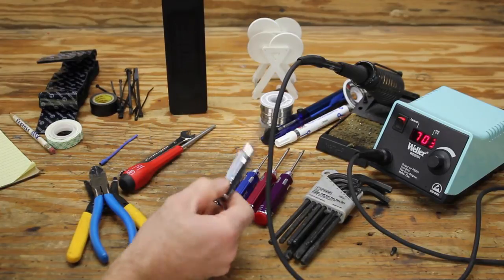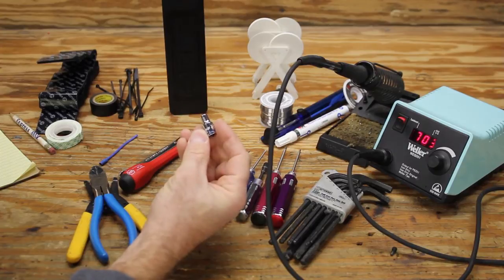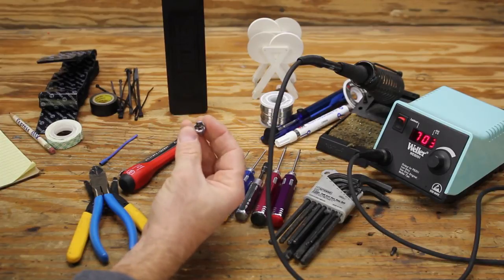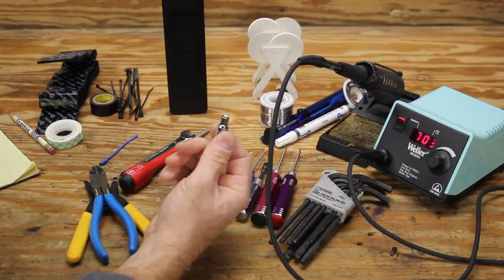If you can't get that, you could just go to the local home center. Chances are they have a 5.5 millimeter socket and this one goes on a quarter inch drive handle. So that's handy to have.